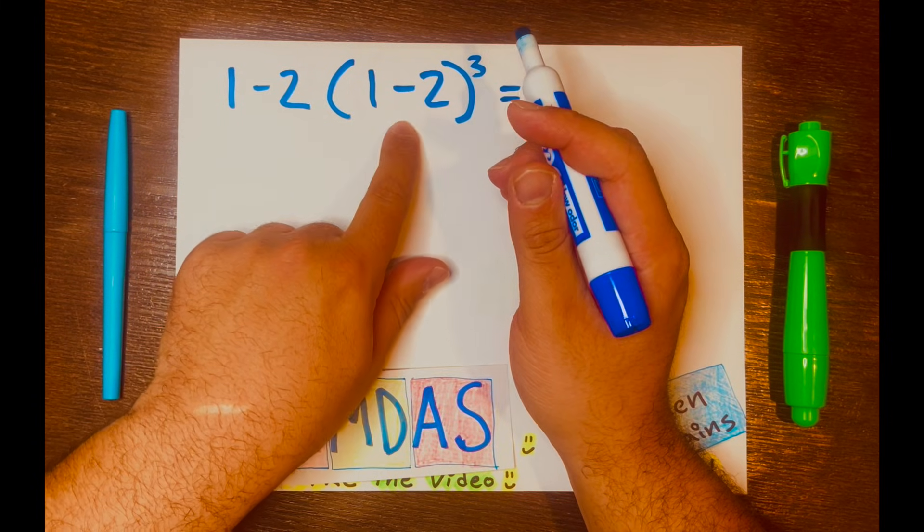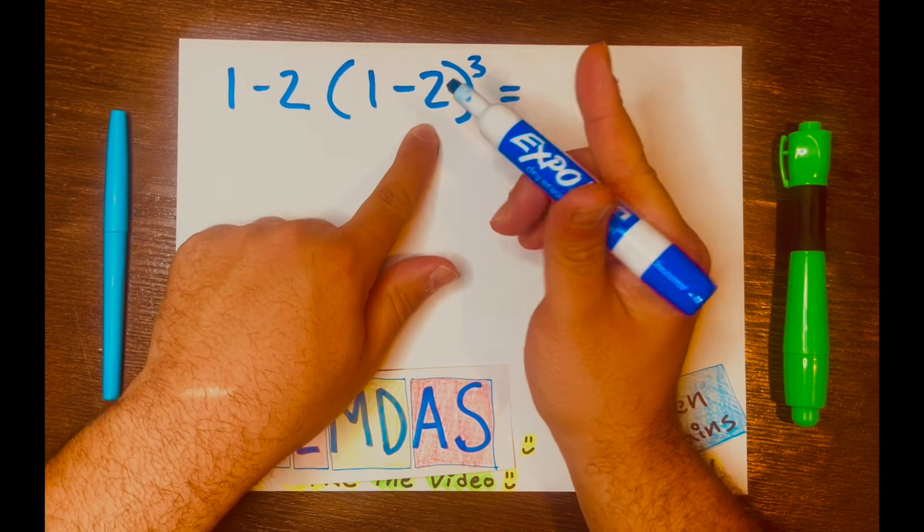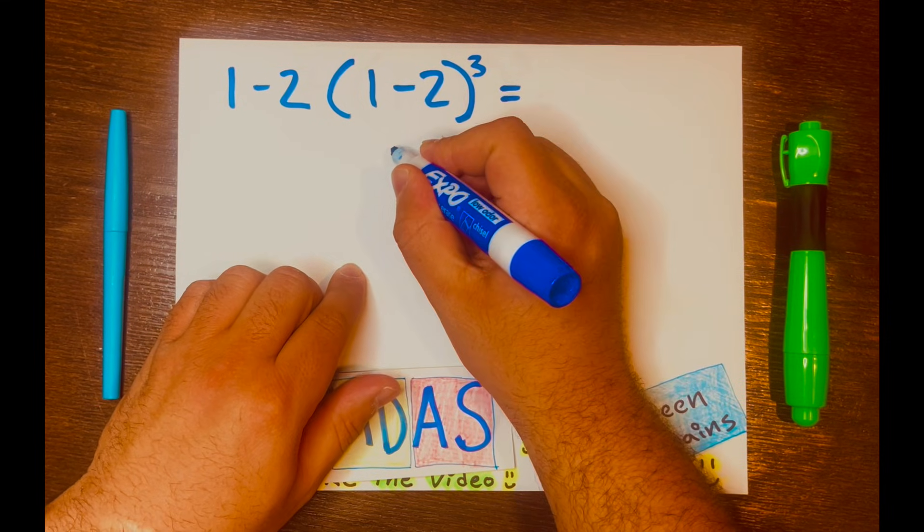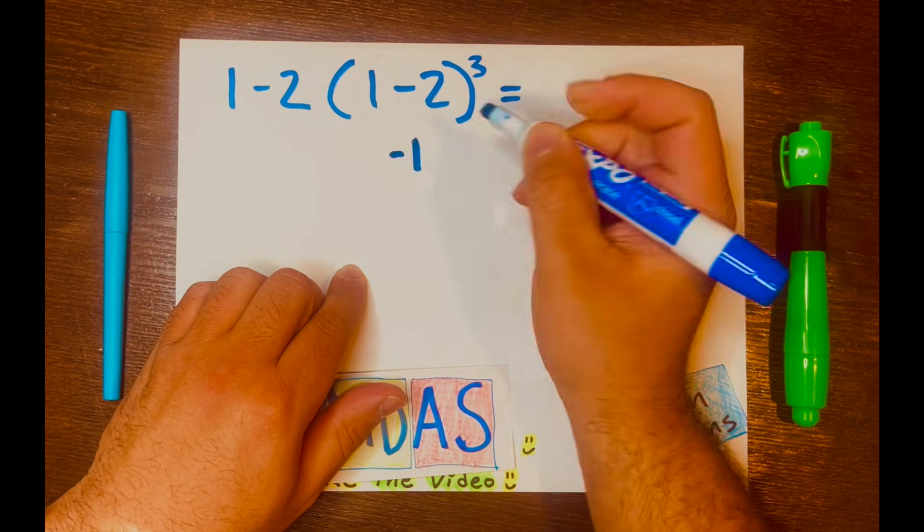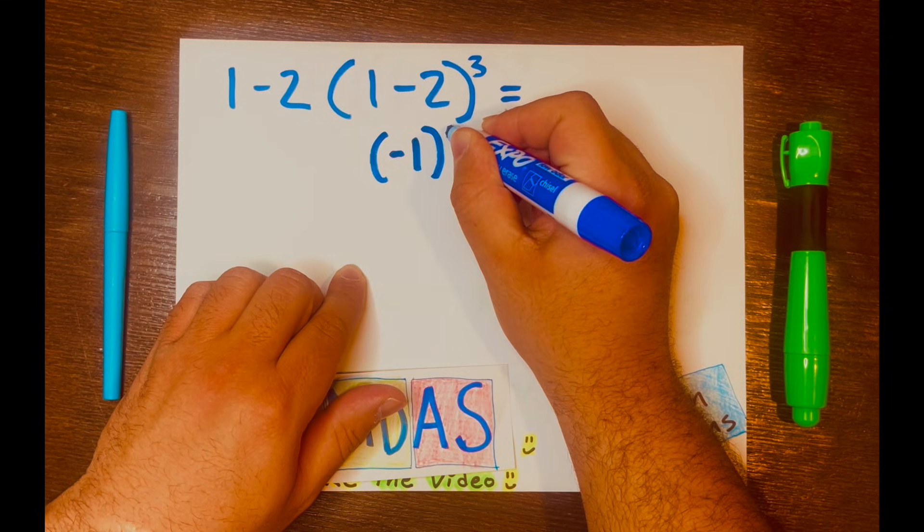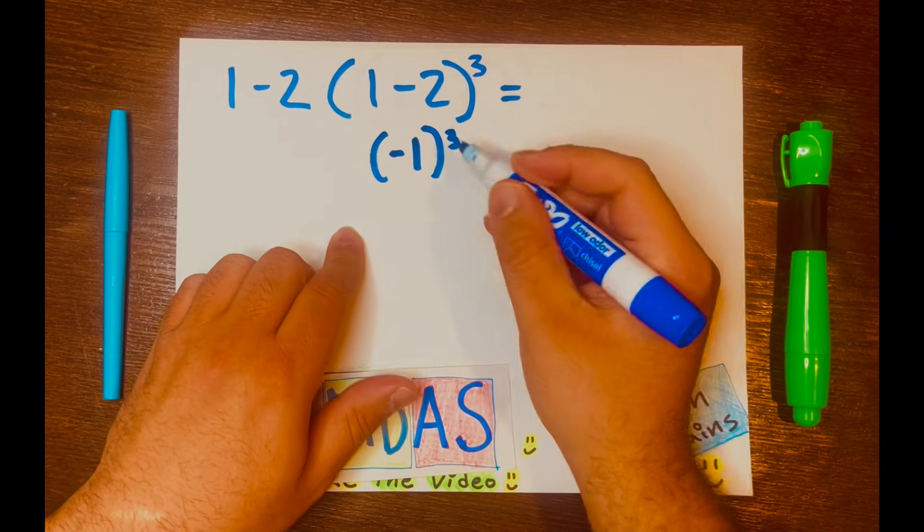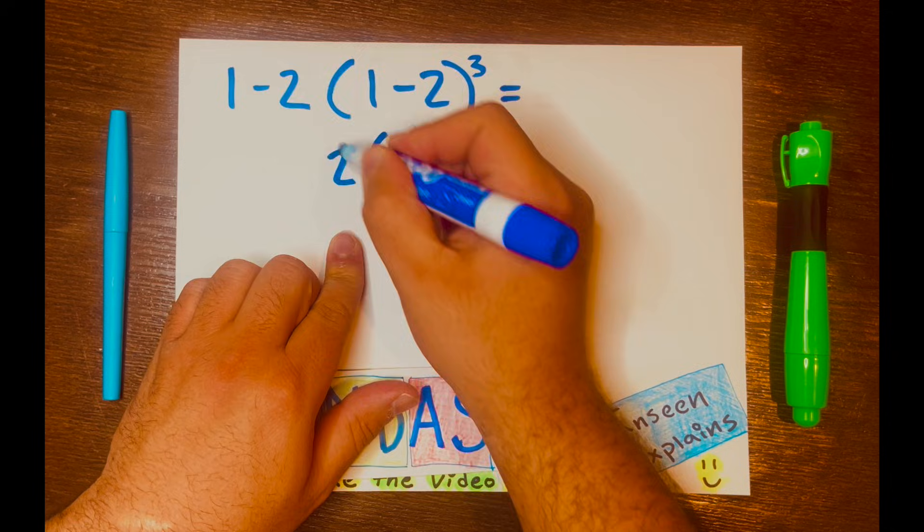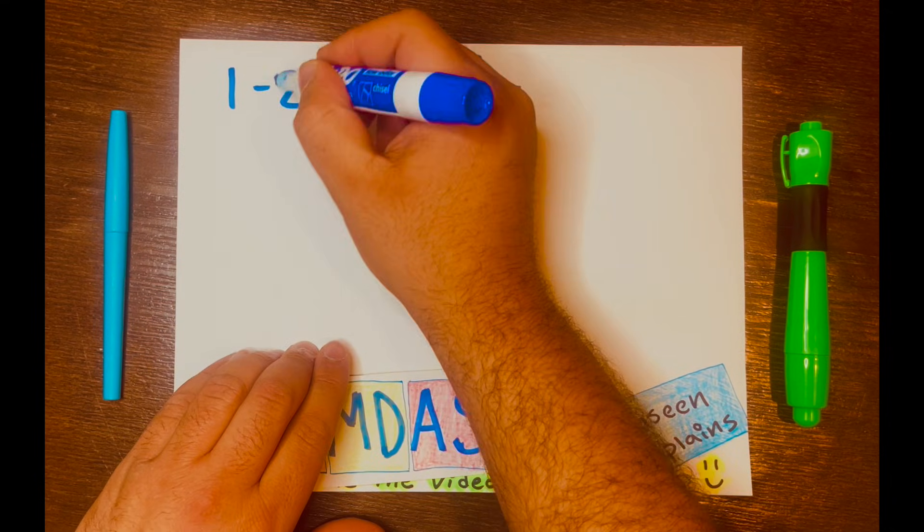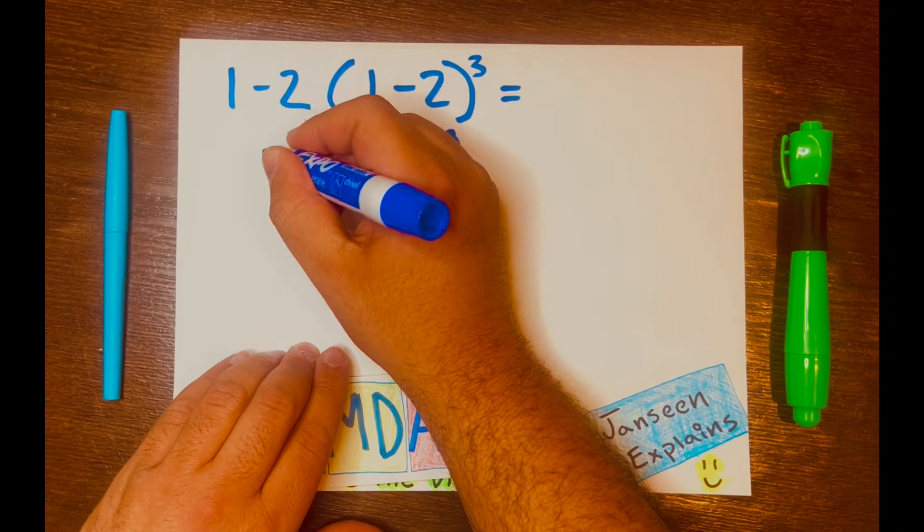So what is 1 minus 2? Negative 1. And I'll keep the brackets and the exponent 3. And I'll bring down the 2, the subtraction symbol down, and the 1 down.